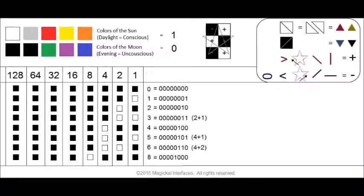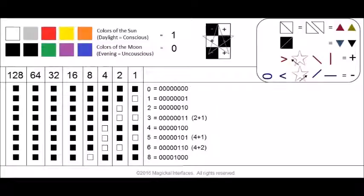The whole point of this presentation is to explain how binary works. In the first column I've got colors that correspond to the sun — colors that correspond to 'on.' The word S-O-N does have the word 'on' embedded in it. White, silver, red, yellow, and orange represent on, or 1.